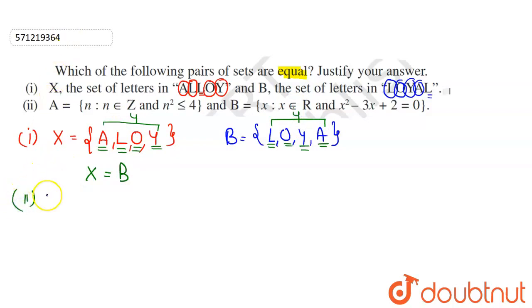Now, in second part, this can be written as A is equal to, so n belongs to set of integers and n square is less than or equal to 4. And B set is basically an element x such that x belongs to R and x square minus 3x plus 2 is equal to 0.